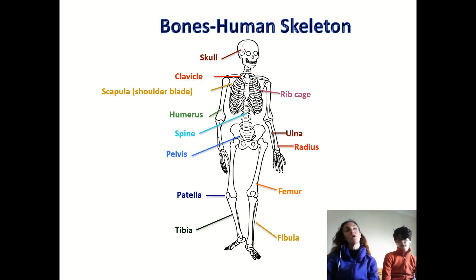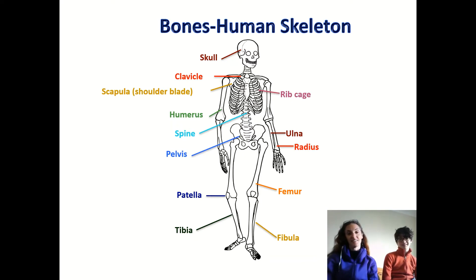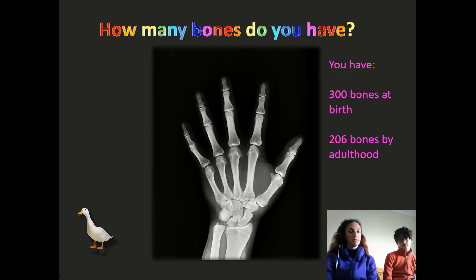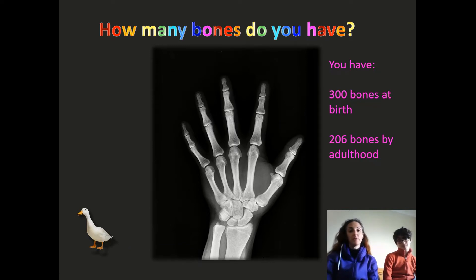But what about the smallest bone in your body? Where do you think that is? It's a bone in your ear. Yes, exactly — it's a tiny, tiny little bone in your ear. Now, how many bones do you have? Well, it changes throughout your lifetime. When you're born, you have 300 bones, but by the time you get to be an adult, you have 206. Isn't that weird?